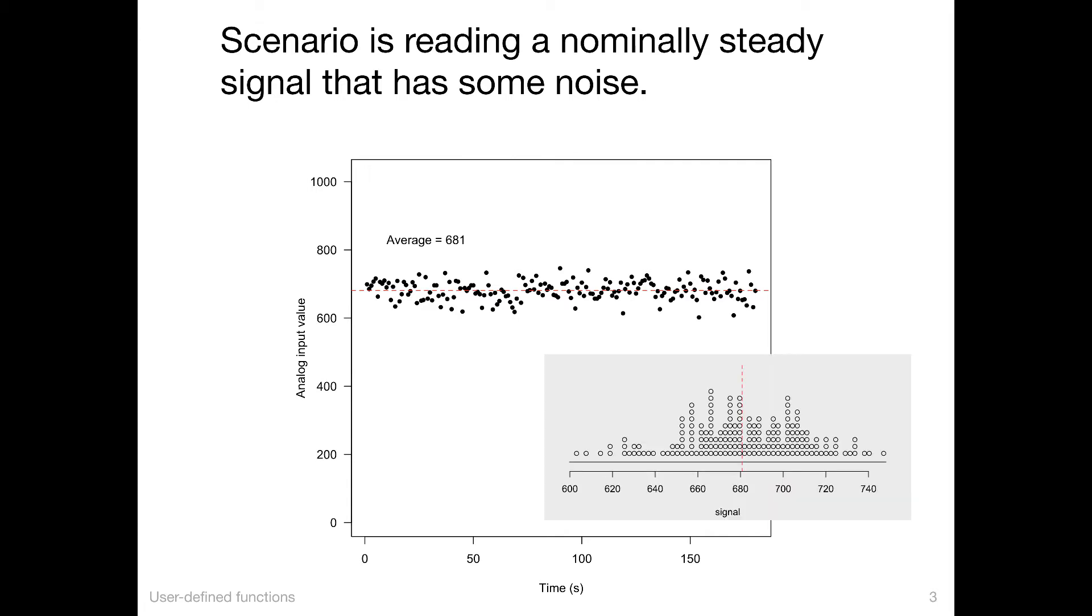The inset shows an alternative view, which is a kind of histogram. Each circle represents a reading. Since these are integer values on a 10-bit scale, the readings will repeat, even though they're slightly different from each other. The rounding gives you an integer value, and the values stack up when they're repeated. More values are repeated in the center, fewer values at the edges. This suggests a tendency for all those measurements in the first plot to clump near a central value, in this case 681.